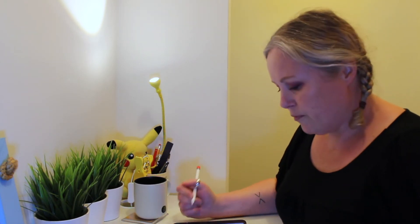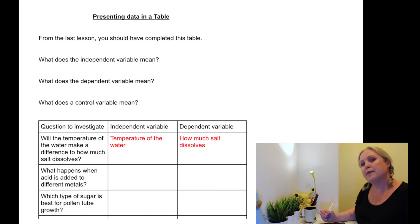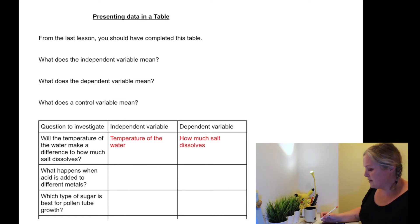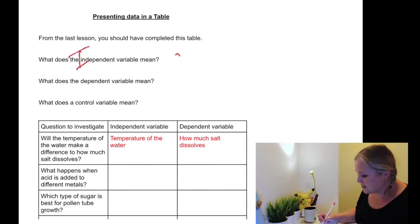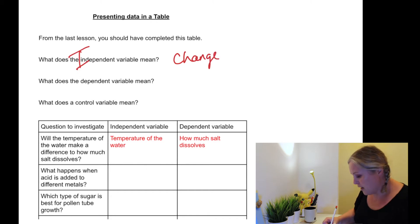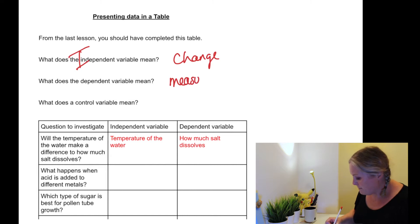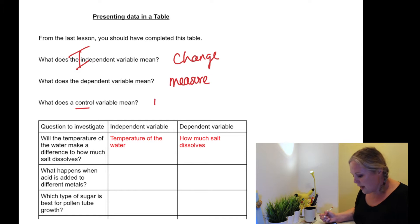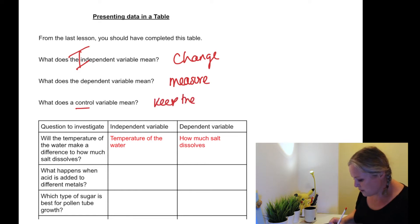Just a little bit of a recap from last lesson: what's an independent variable, what's a dependent variable, and what's a control variable? An independent variable is the variable that you change — I always remember it because it starts with an I. The dependent variable is the one you measure; it's dependent on the result of the experiment. And the control variable is the one you keep the same.